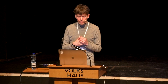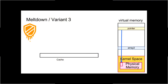Now Meltdown, variant three. On the right-hand side you can see the virtual memory layout of a user-space process. The virtual address space of user space and kernel space is shared — at least on x86 — so while user space does not have permissions to access kernel mappings, those mappings are present in the same page tables, with a bit in the page table indicating whether you can access the memory from user space or only from kernel space.